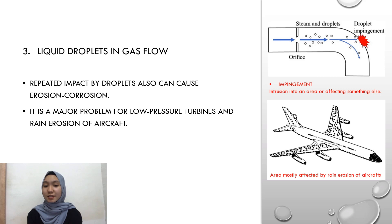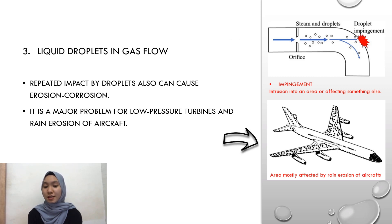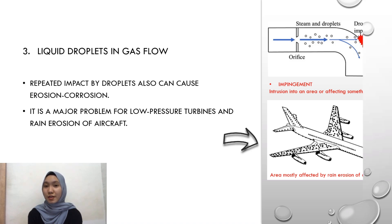Liquid droplets in gas flow is a major problem for low-pressure turbines and rain erosion of aircraft. At the right corner, here is the image of impingement, like intrusion into an area or affecting something else. The next figure shows the areas mostly affected by rain erosion of the aircraft.